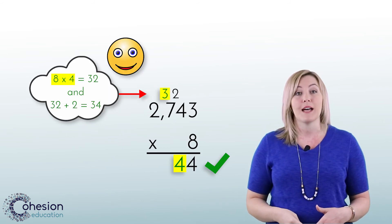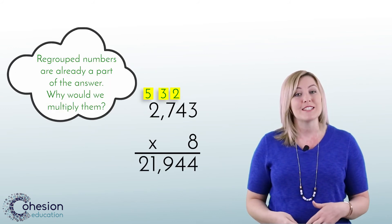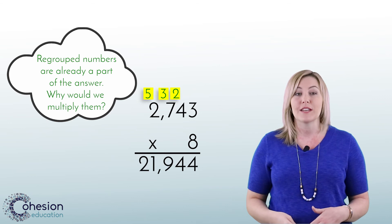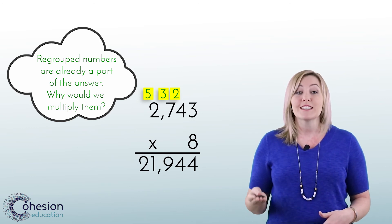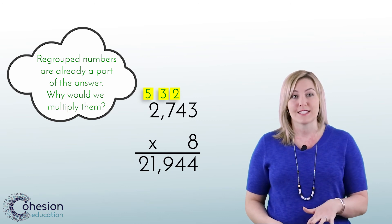Instead of multiplying, then adding for 34. To address this issue, remind students that the regrouped numbers are already part of the answer. They just need to be moved over a place value. This is why we add them at the end of that step.